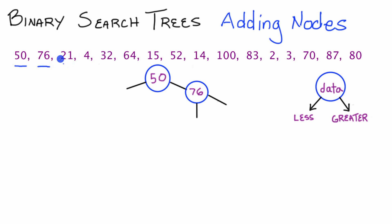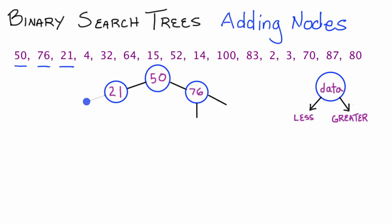Next we add the number 21. Starting at the top, 21 is less than 50, so we go to the left pointer, which isn't pointing to anything yet, and place 21 there. We give the 21 node a left pointer and a right pointer.